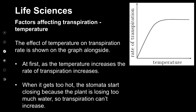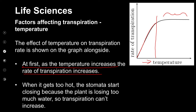Looking at the graph: as the temperature increases, the rate of transpiration increases. But after a while, that increase stops. Why? As it gets very hot and the plant loses too much water, the stomata start closing. So even if the air is hot, because the stomata are closed, more transpiration can't occur — the transpiration rate then stabilizes or remains more or less constant.